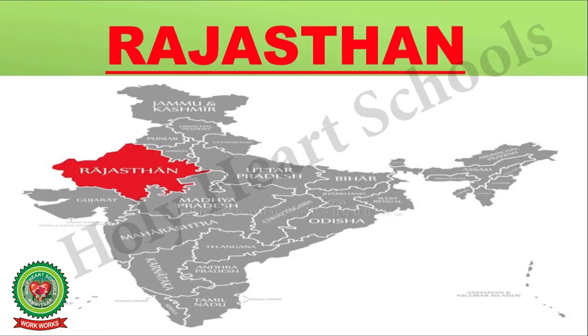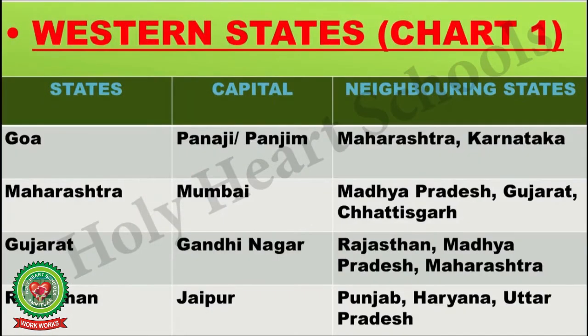Now, let's discuss these Western states with the help of a chart. Number 1 is Goa. The capital of Goa is Panaji. Its neighboring states are Maharashtra and Karnataka. Number 2 is Maharashtra. Its capital is Mumbai. Its neighboring states are Madhya Pradesh, Gujarat and Chhattisgarh. Number 3 is Gujarat. The capital of Gujarat is Gandhinagar. Its neighboring states are Rajasthan, Madhya Pradesh and Maharashtra. Number 4 is Rajasthan. Its capital is Jaipur. The neighboring states of Rajasthan are Punjab, Haryana and Uttar Pradesh.